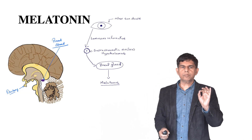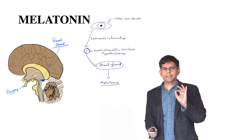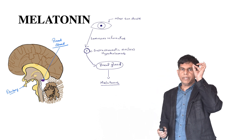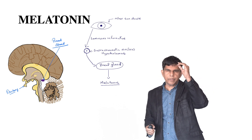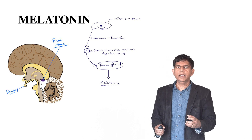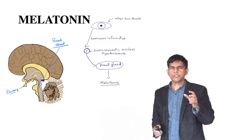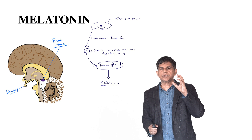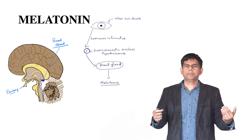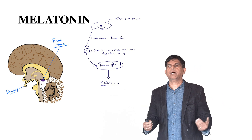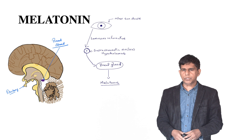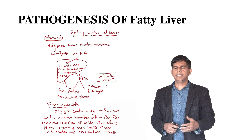Melatonin is produced in the pineal gland. When it becomes dark, the retina sends luminous information to the suprachiasmatic nucleus in the hypothalamus. The signal then travels to the pineal gland, which receives the signal to produce melatonin, and melatonin has a lot of effects in the body.